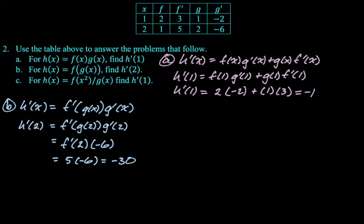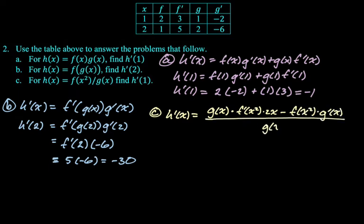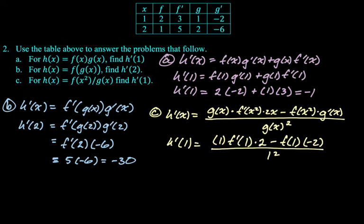And then for part c, we're going to do the quotient rule. So h prime is going to be bottom, derivative of the top requires the chain rule, f prime of x squared times 2x, minus top f of x squared, derivative of the bottom is just g prime, all over the bottom, g of x squared. Now everywhere you see an x, replace it with a 1.